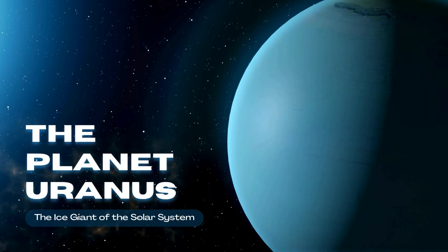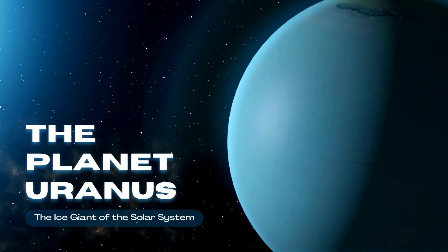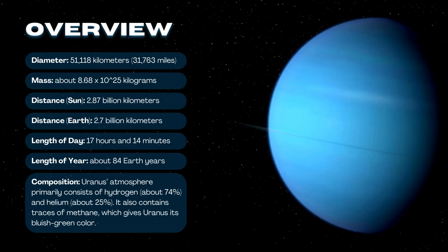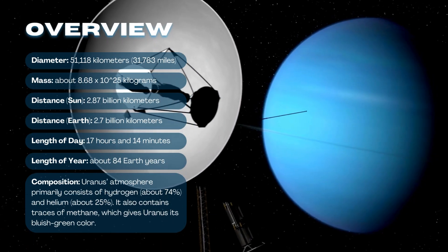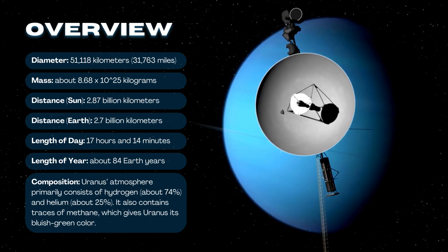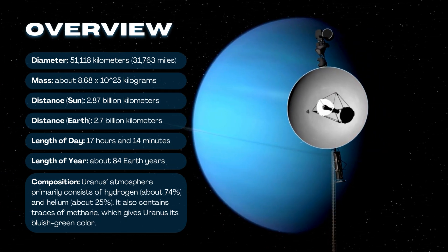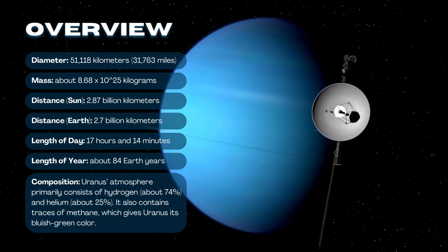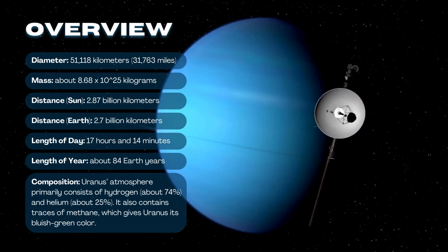The planet Uranus, the ice giant of the solar system. Composition: Uranus' atmosphere primarily consists of hydrogen, about 74%, and helium, about 25%. It also contains traces of methane, which gives Uranus its bluish-green color.